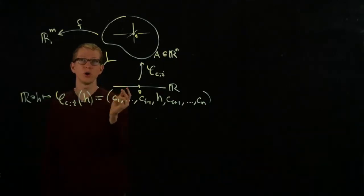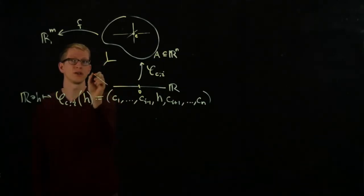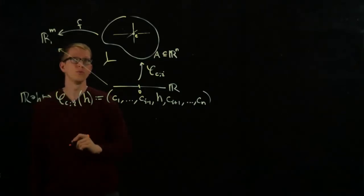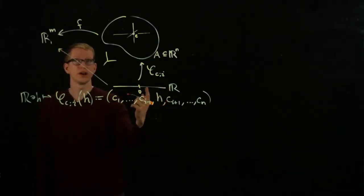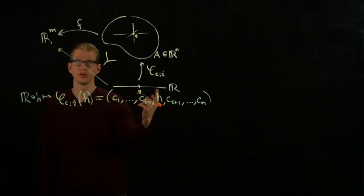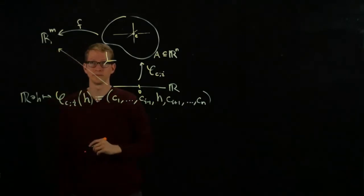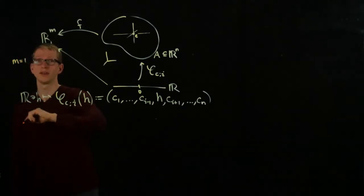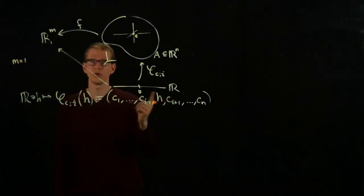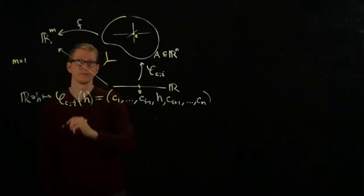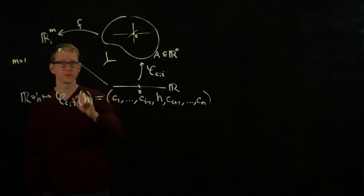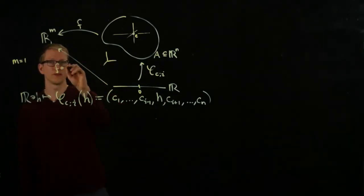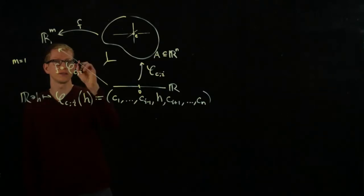When we compose these two functions, we will get a function of a single variable as its input mapping into R^m. For simplicity, if we take m equals 1, then this gives us an ordinary real-valued function from R to R.